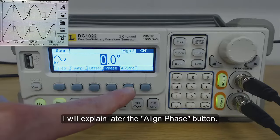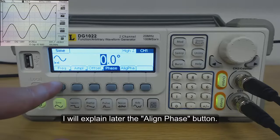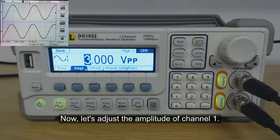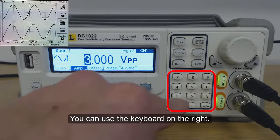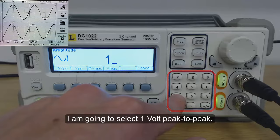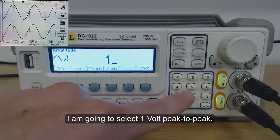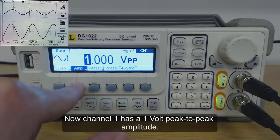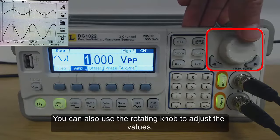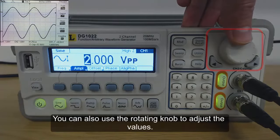I will explain later the align phase button. Now let's adjust the amplitude of channel 1. You can use the keyboard on the right. I'm going to select 1V peak to peak. Now channel 1 has a 1V peak to peak amplitude. You can also use the rotating knob to adjust the values.